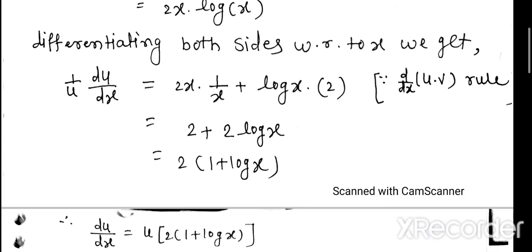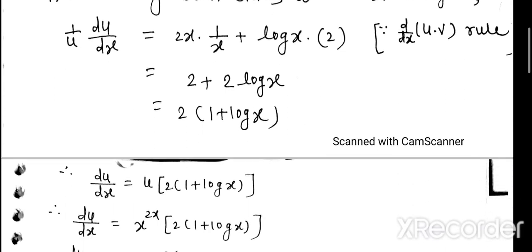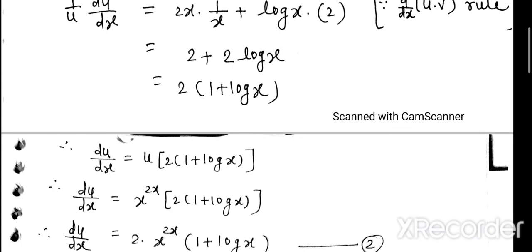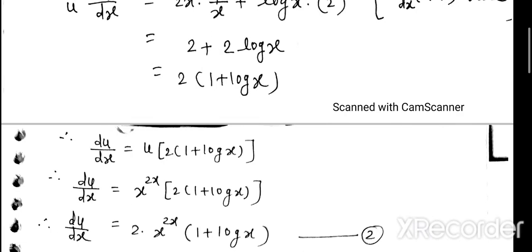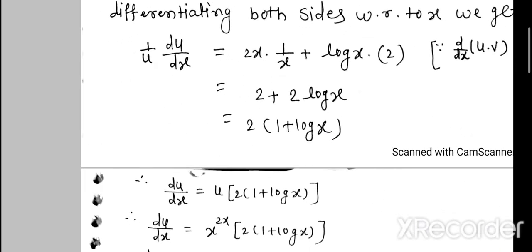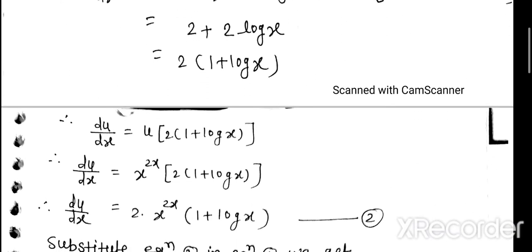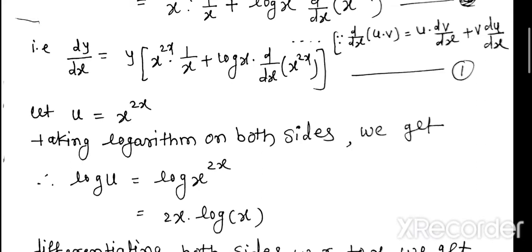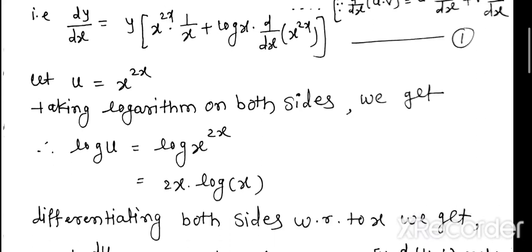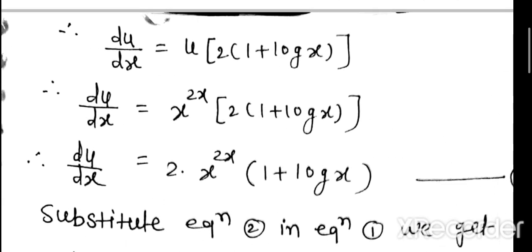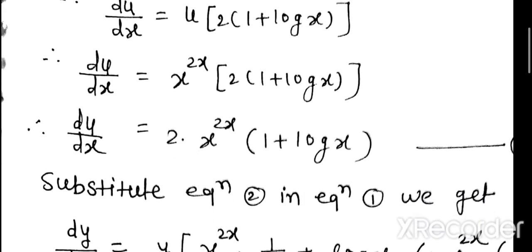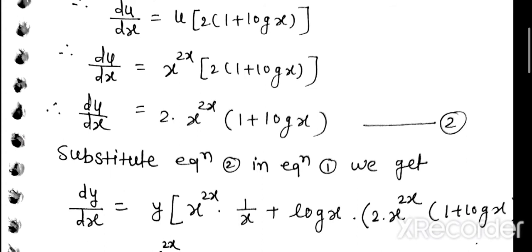Taking 2 as common, we get 2(1 + log x). Therefore du/dx becomes u into 2 into (1 + log x). Substituting u equals x to the power 2x, we get du/dx equals 2 · x^(2x) · (1 + log x). We call this equation 2.